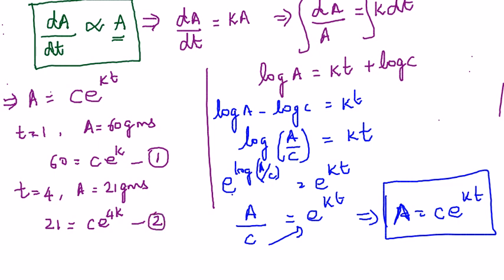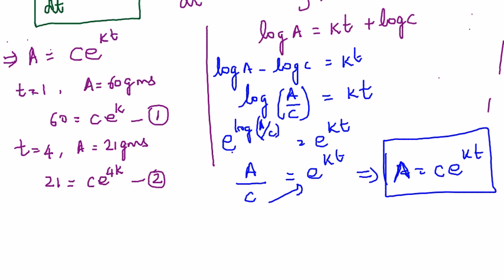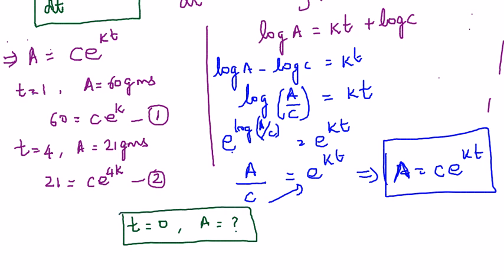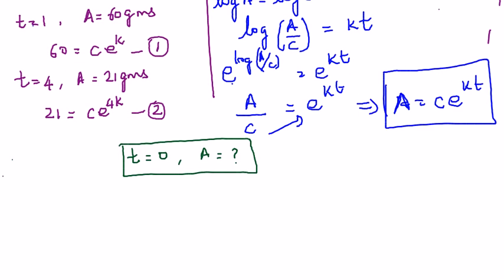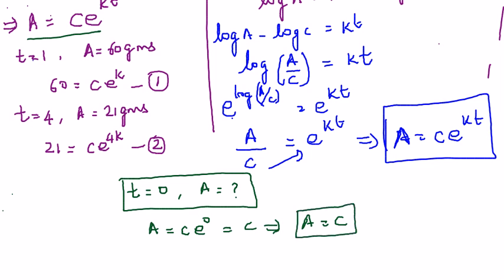We need to find how many grams of substance were present initially, that is, the value of A when t = 0. Substituting t = 0 into A = Ce^(kt): A = Ce^(k×0) = Ce^0 = C. So at t = 0, A = C. This means finding C is equivalent to finding the initial amount.